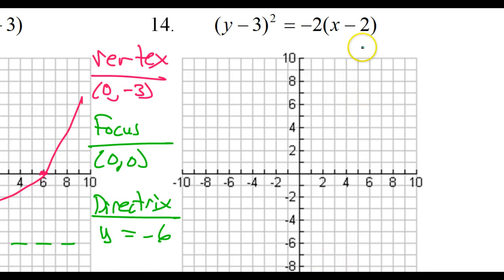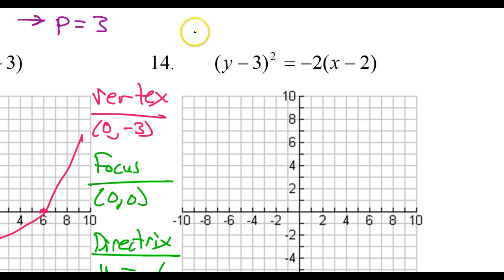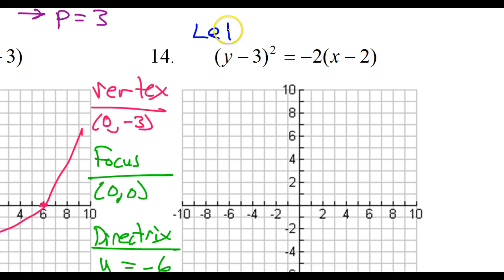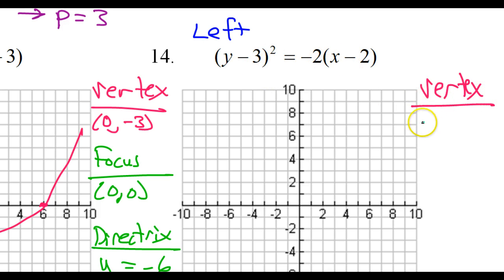Number 14. I see that the y is being squared, so that tells me it's either going to be left or right — it's definitely sideways. Because the 2 is negative, I know that this is going to go to the left. The vertex is going to be the opposite of these values, but be careful: the x coordinate comes from the x part, not the y part. So this is going to be positive 2 comma positive 3 for the vertex — that's 2 comma 3.